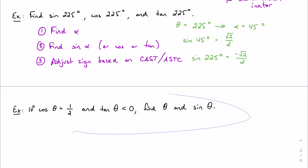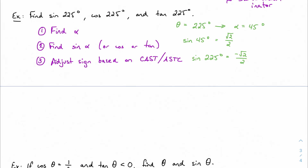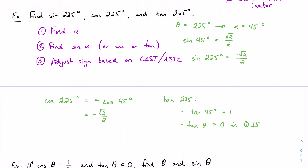Same logic for cosine and tangent. Cosine of 225 works like cosine of 45, but tangent is the only thing positive in quadrant 3, so cosine of 225 is negative √2/2. For tangent of 225, we know tangent of 45 is 1, and tangent is positive in quadrant 3, so tangent of 225 is 1.